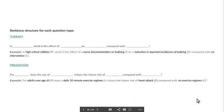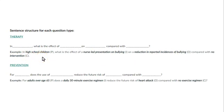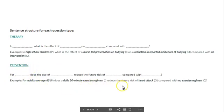Here's an example of how this works. For a therapy question we've inserted the P, the I, the O, and then the C: 'In high school children, what is the effect of a nurse-led presentation on bullying on a reduction in reported incidences of bullying compared with no intervention?' That is a therapy type question. The same thing is true for other types of questions — you just plug in your PICO elements and insert them into the question structure.